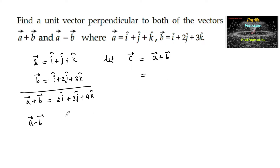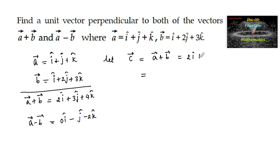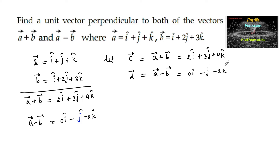Subtracting the two vectors, let us consider it to be vector d. So it is 0i, then 1 minus 2 that is minus j, and then 1 minus 3 that is minus 2k. So vector d equals a minus b, which is equal to 0i minus j minus 2k.